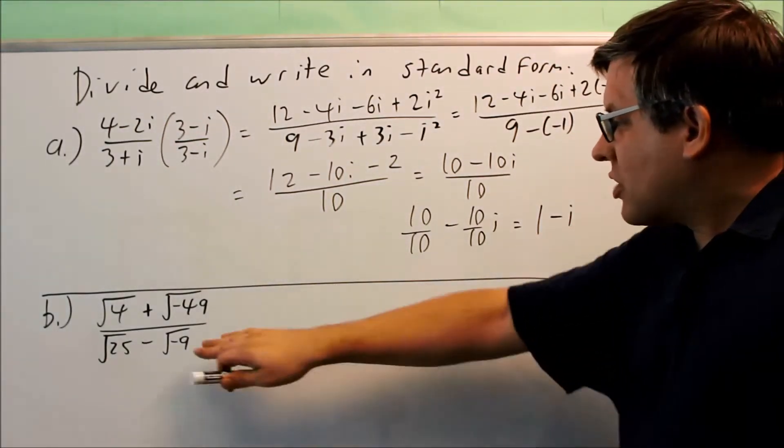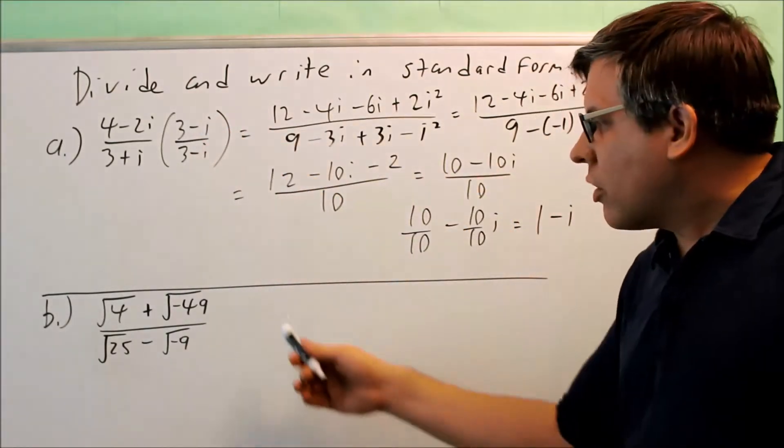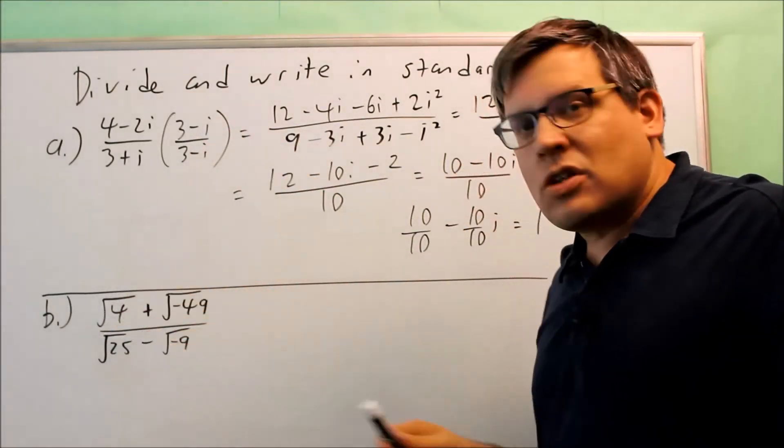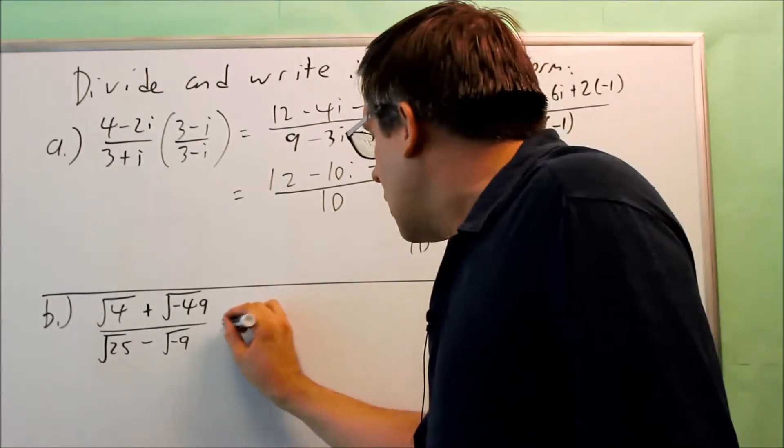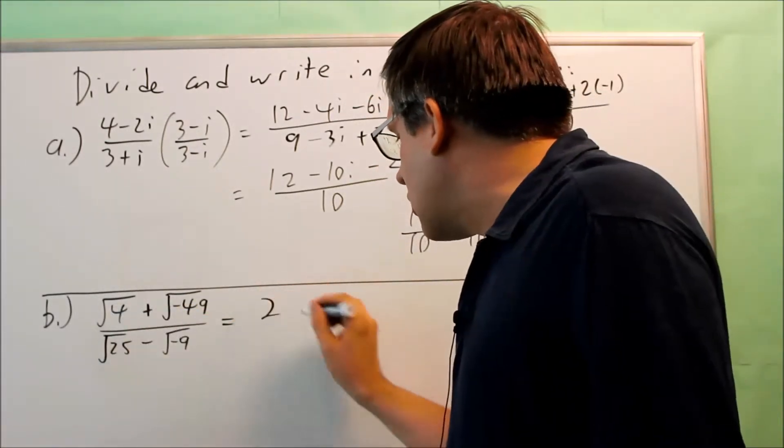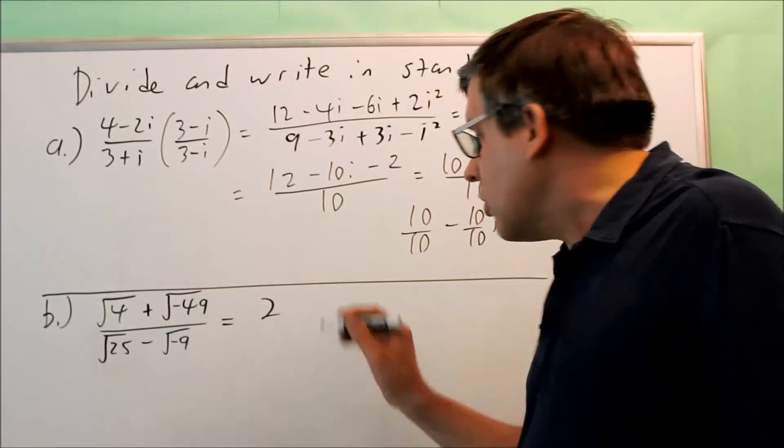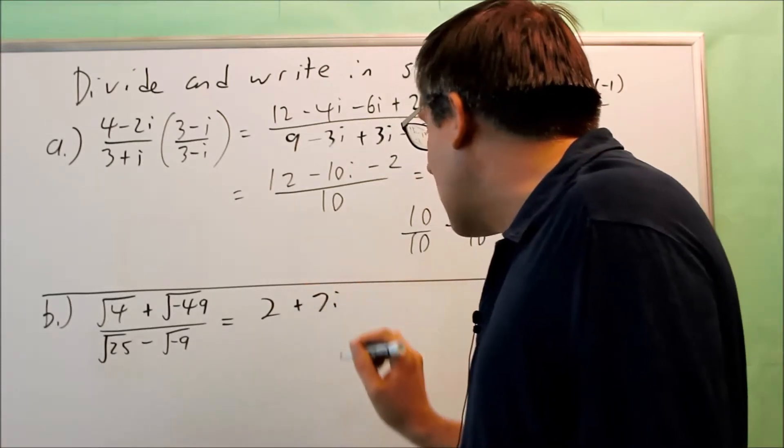And so now we're going to do the same thing for part b. Now before you do the same process that we did up here, what you want to do is first change these into i's and get rid of the square roots. So square root of 4, that's going to be 2. Square root of 49 is 7. And because there's a negative underneath the square root, that means it's going to turn into a 7i.